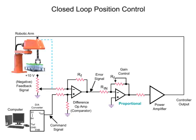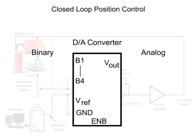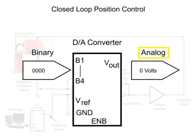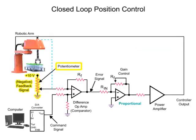To move the robotic arm to a specific position, a command signal from the computer starts the motion sequence. The analog command signal voltage produced by the digital-to-analog converter determines the position of the arm. The potentiometer attached to the robotic arm in the circuit indicates the actual position, and the variable voltage produced is referred to as the feedback signal.